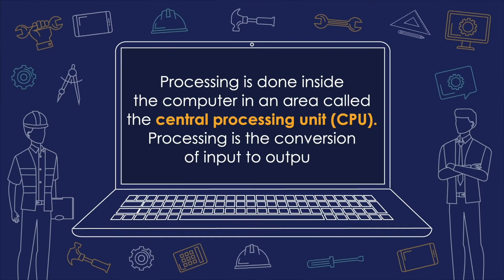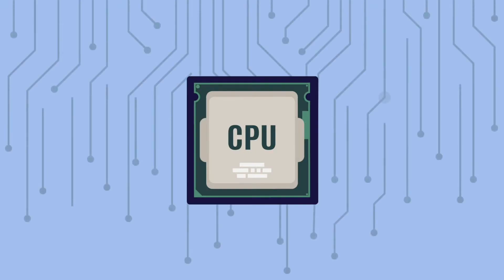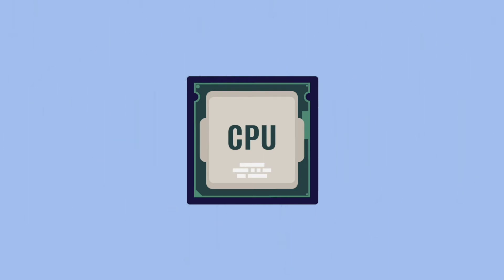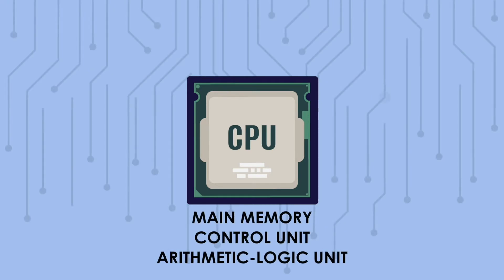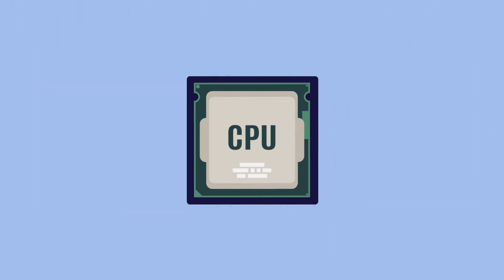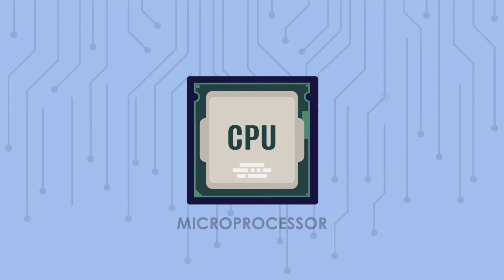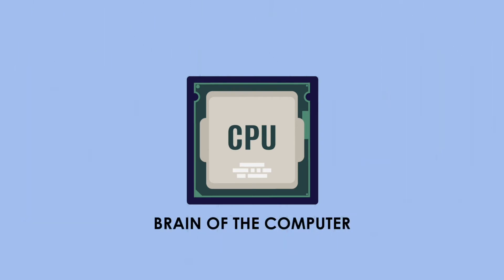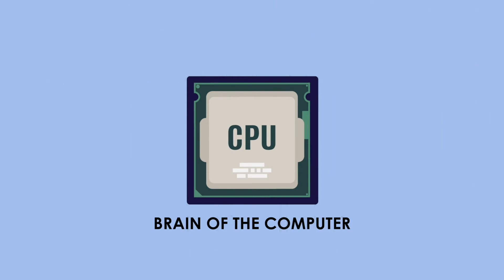Processing is the conversion of input to output. The central processing unit or CPU is the principal part of any digital computer system, generally composed of the main memory, control unit, and arithmetic logic unit. In modern computers, the CPU is contained in an integrated circuit chip called the microprocessor. Being the brain of the computer, the CPU is where processes such as calculating, sorting, and searching take place.